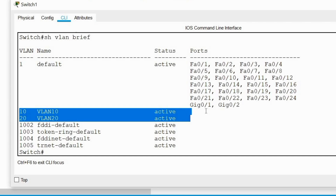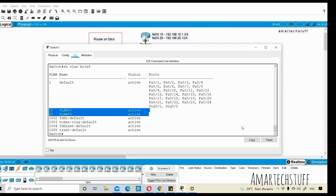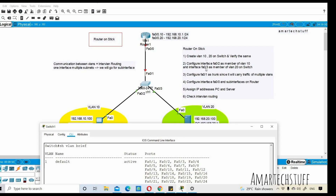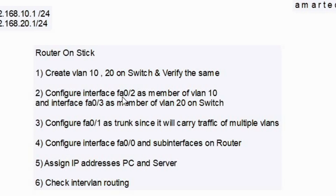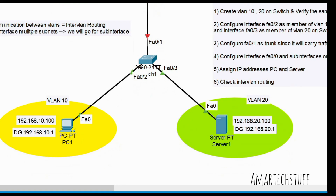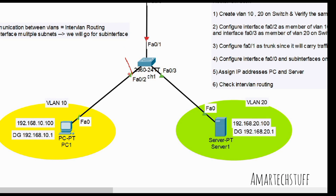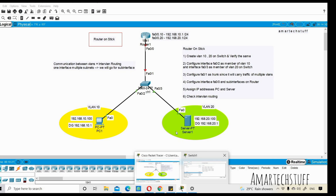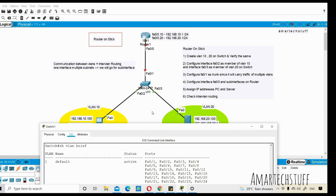There are no interfaces assigned yet, so we need to configure the interfaces as well. Step two says: configure interface FastEthernet 0/2 as a member of VLAN 10, and configure FastEthernet 0/3 as a member of VLAN 20. Let's configure those.